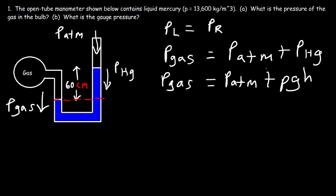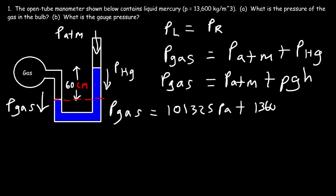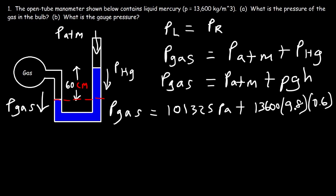The only thing we're missing is the atmospheric pressure, which was not given in this problem. If it's not given, always assume the elevation is at sea level, where the atmospheric pressure is 101,325 pascals. Then rho is the density of mercury, which is 13,600; g is 9.8; and the height is 60 centimeters, which converts to 0.6 meters. Typing this all in, you should get a pressure of 181,293 pascals — that's the pressure of the gas in the bulb.